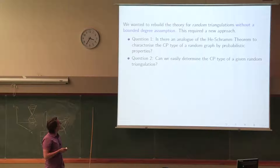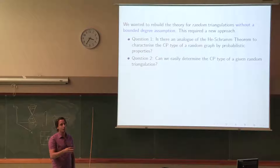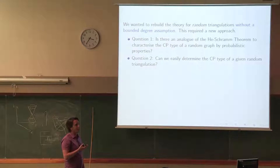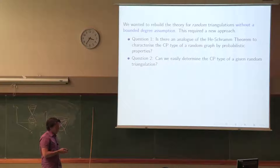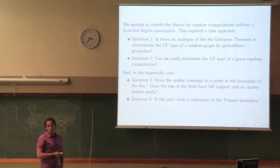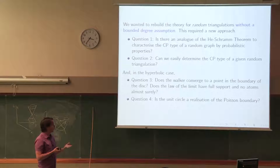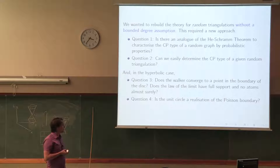We want to find an analog to the He-Schramm theorem: can we determine a random triangulation's circle packing type from some very basic properties? And when we're in the hyperbolic case, can we recover the boundary theory? Can we show that a random walker converges to the boundary, and that the exit measure has full support and no atoms? Is the unit circle a realization of the Poisson boundary?